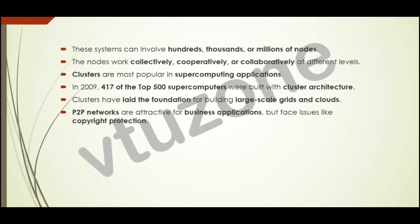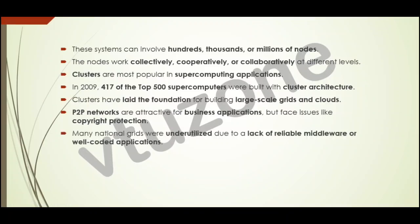Peer-to-peer networks are useful in businesses like file sharing, but they have problems with illegal file sharing and security. Many national grids were underutilized due to lack of reliable middleware or well-coded applications — some large grid systems built by governments were not used much because the software was not reliable and applications were not well-developed. Cloud computing is cheaper and easier to use, both for users who just need to connect and use it, and for providers who can manage everything efficiently.